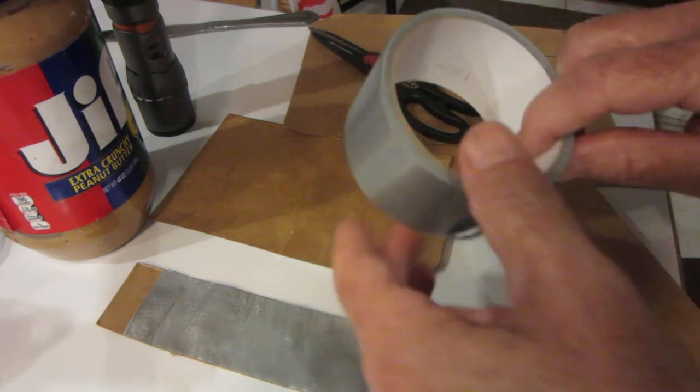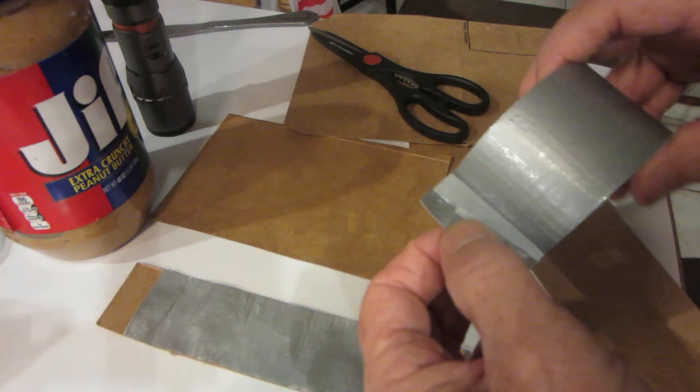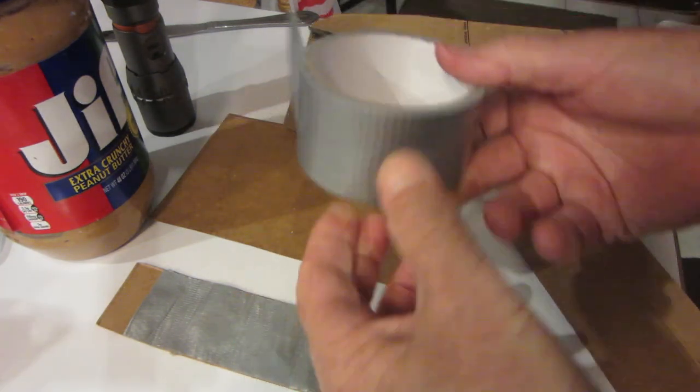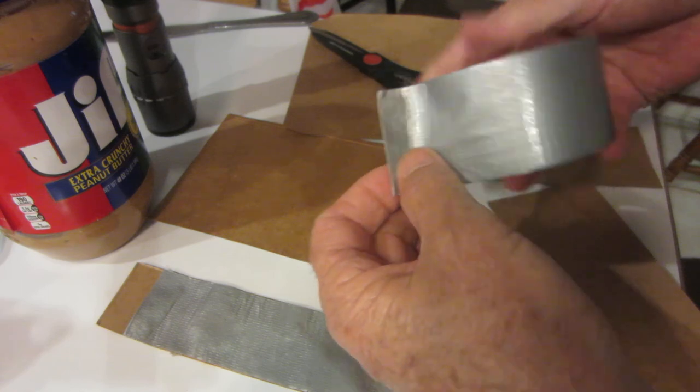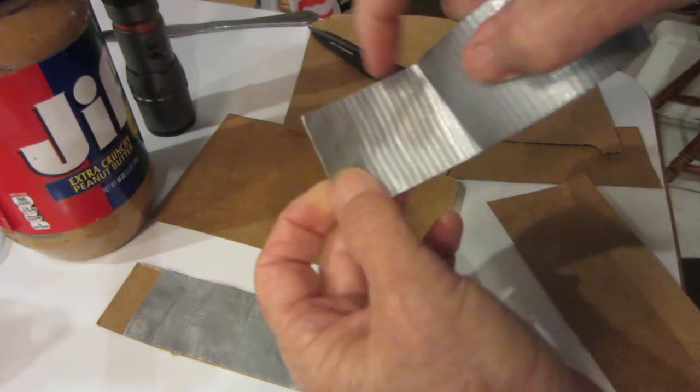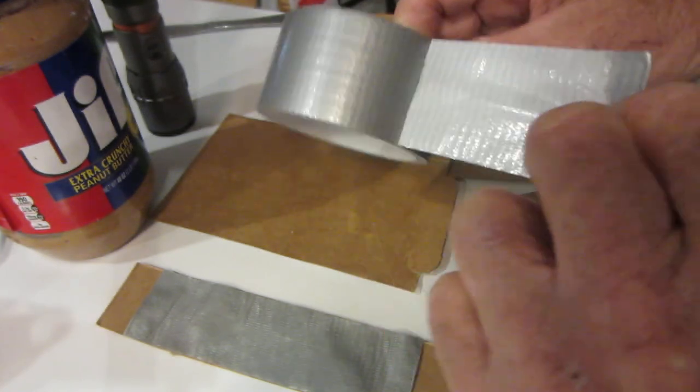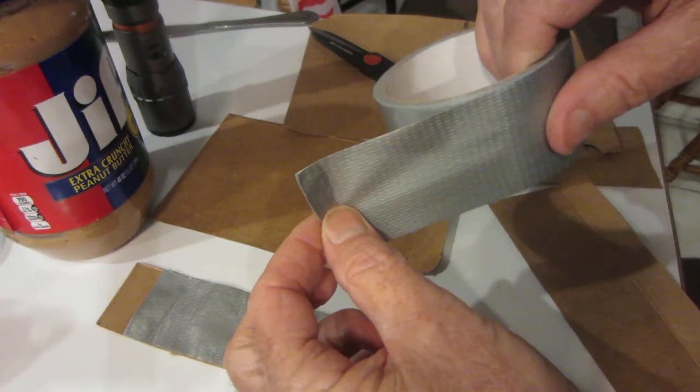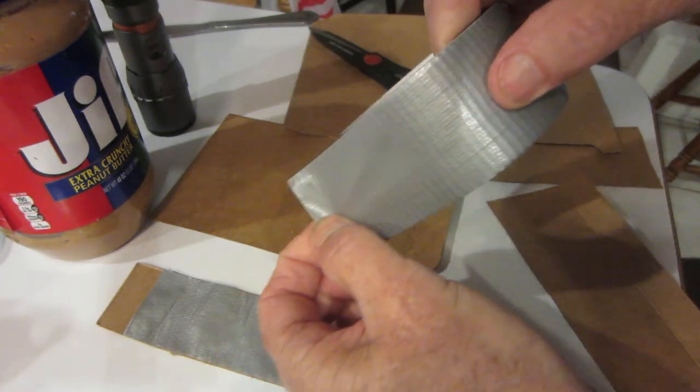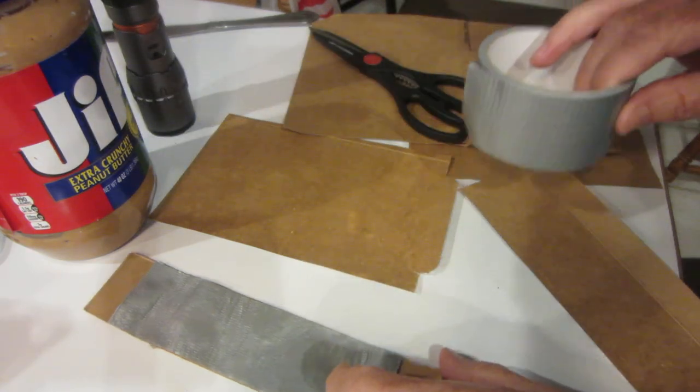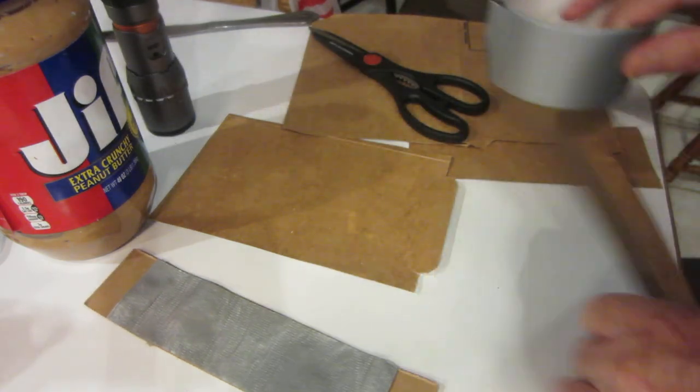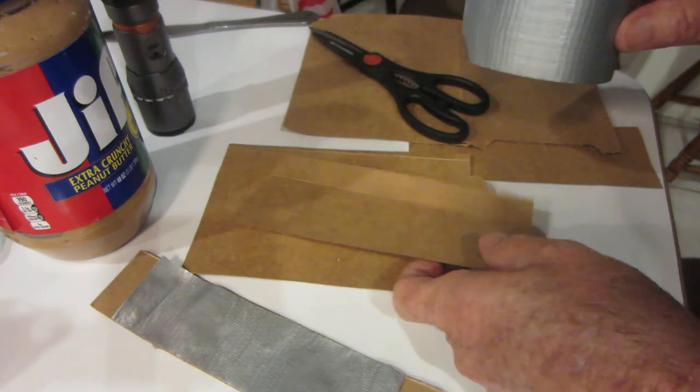Okay, so this tape came from Dollar Tree, a dollar for this tape, and it's silver and cloth. They call it cloth back tape, but it's called duct tape, D-U-C-T. This is the cheapest tape you can get, a dollar for a roll, and I've used it on several of these traps and it's worked good.